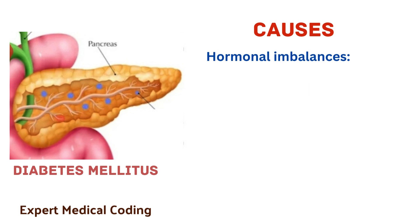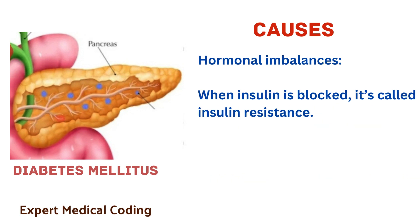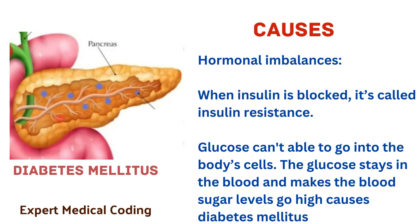The next cause is hormonal imbalances. During pregnancy, an organ called the placenta gives a growing baby nutrients and oxygen. The placenta also makes hormones. In late pregnancy, the hormones estrogen, cortisol and human placental lactogen can block insulin. When insulin is blocked, it's called insulin resistance. Glucose can't go into the body's cells, so the glucose stays in the blood and makes the blood sugar levels go high, causing diabetes mellitus.